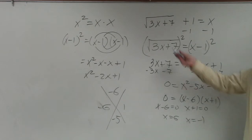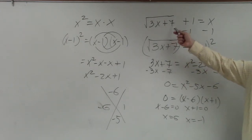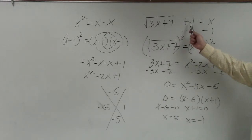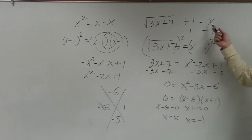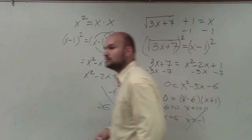Now let's do negative 1. 3 times negative 1 is negative 3. Negative 3 plus 7 is 4. The square root of 4 is 2. 2 plus 1 is 3. However, 3 is supposed to equal negative 1 if you put negative 1 in for x, right? So therefore, this is not a solution.